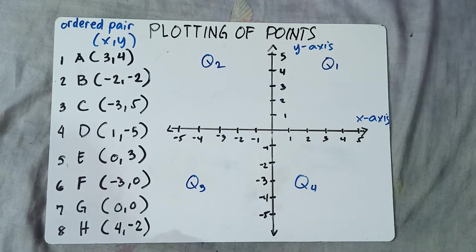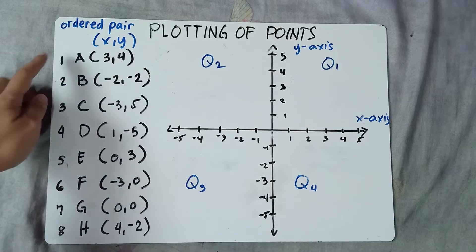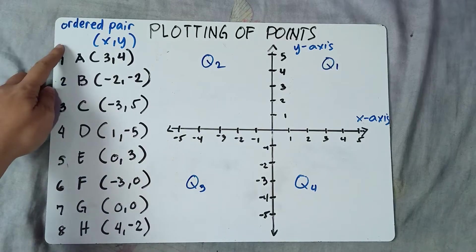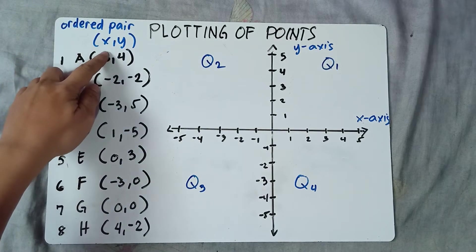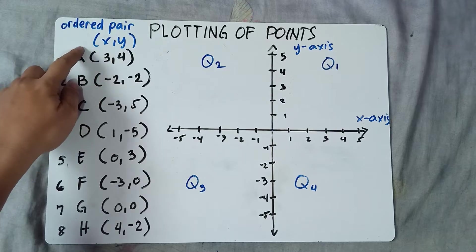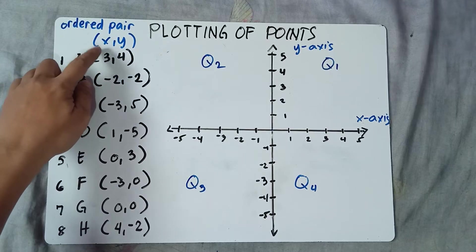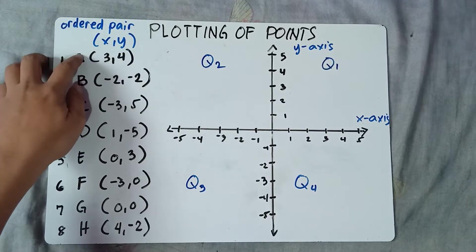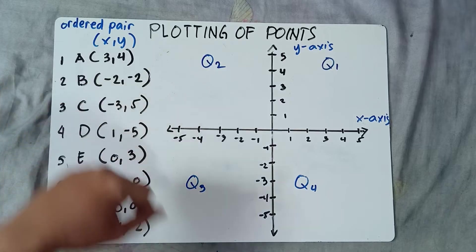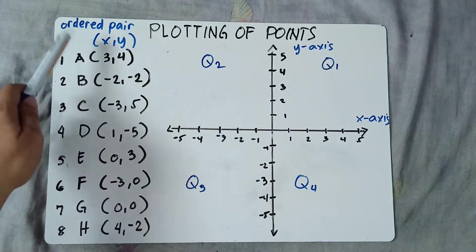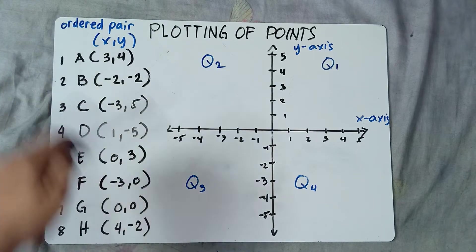Now to plot points, we need to follow the ordered pair. So the ordered pair, that would be x and y. When we plot points, x comes first before y. So we will start on x, then y. We always follow this ordered pair.